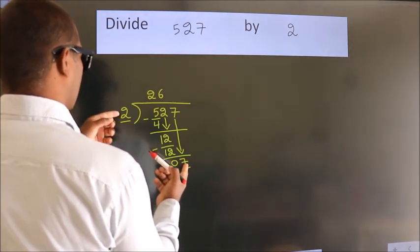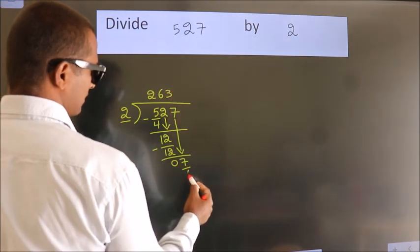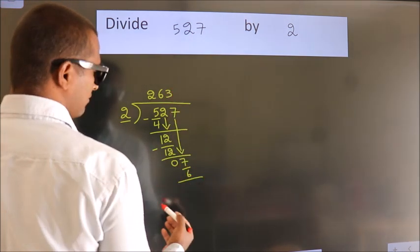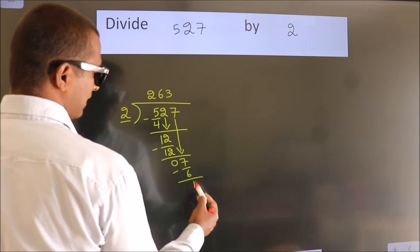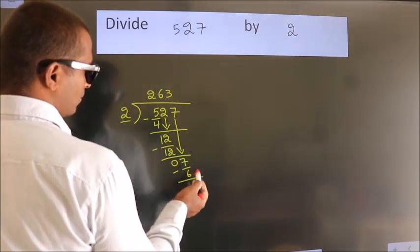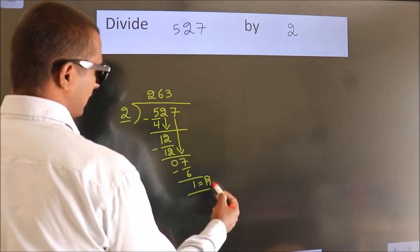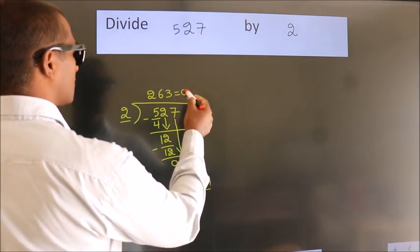A number close to 7 in 2 table is 2 times 3 is 6. Now we subtract, we get 1. No more numbers to bring it down, so we stop here. This is our remainder, this is our quotient.